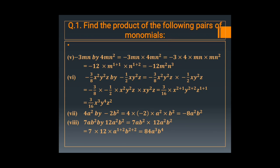In the sixth question: minus 3 upon 8 x square y square z multiplied by minus 1 upon 2 x y square z. Minus 3 upon 8 into minus 1 upon 2 equals 3 upon 16.